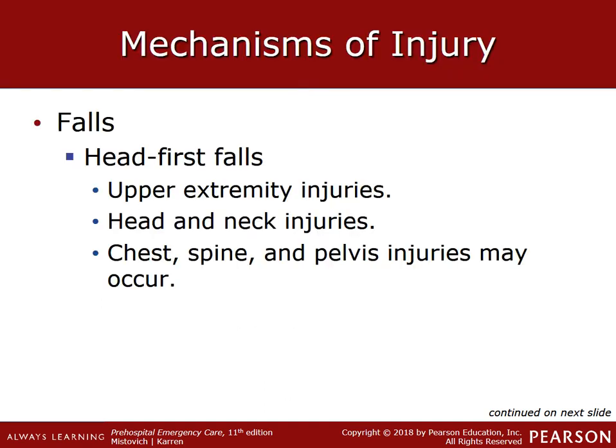In head-first falls, the pattern of injury begins with the arms and extends up to the shoulders, because the natural instinct is to put your hands up to protect your head or catch yourself. The head is then forcibly hyperextended, hyperflexed, or compressed, all of which can cause extensive damage to the cervical spine, as well as injuries to the elbows, humerus, radius, and ulna.